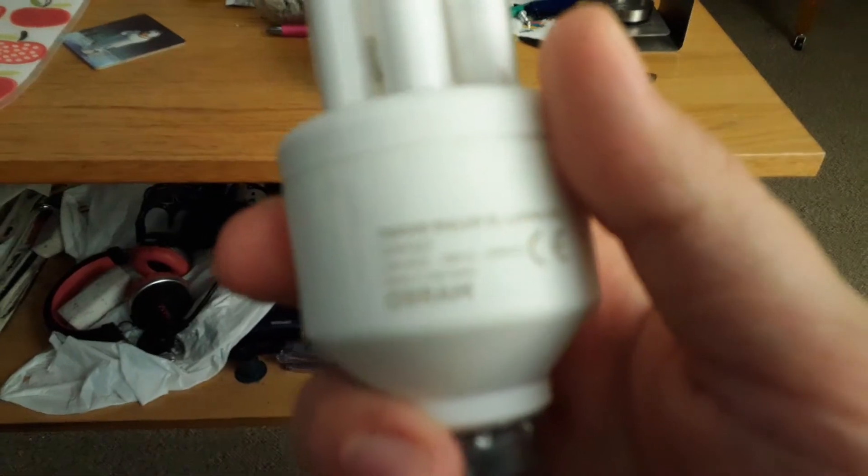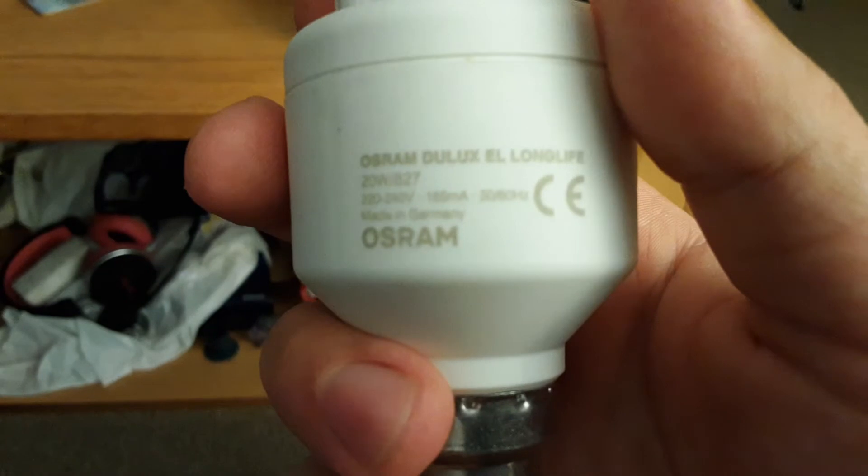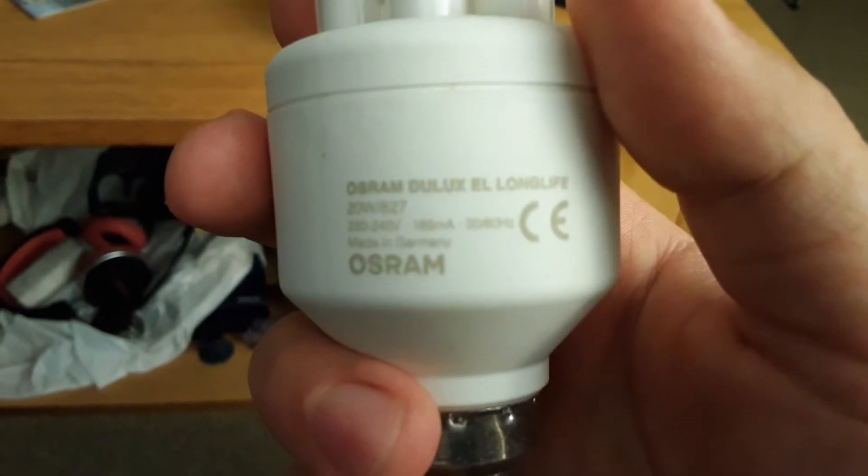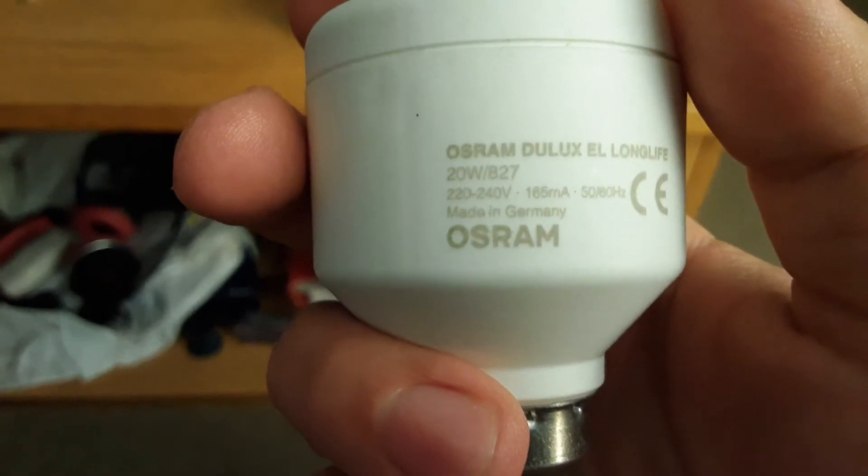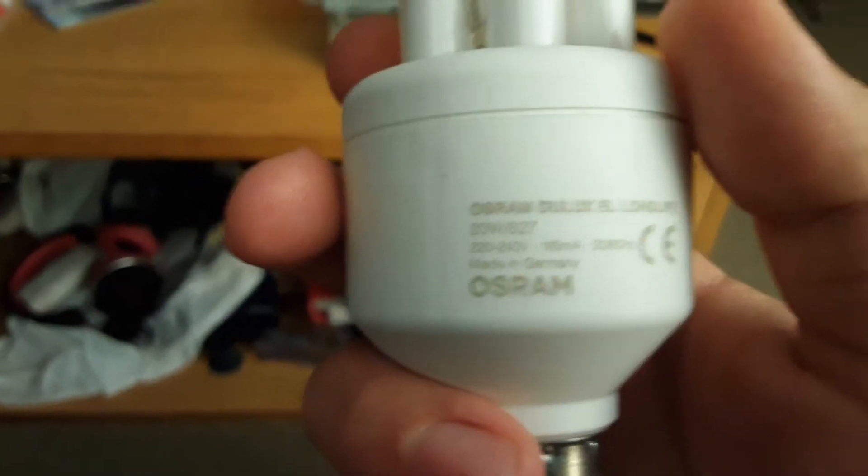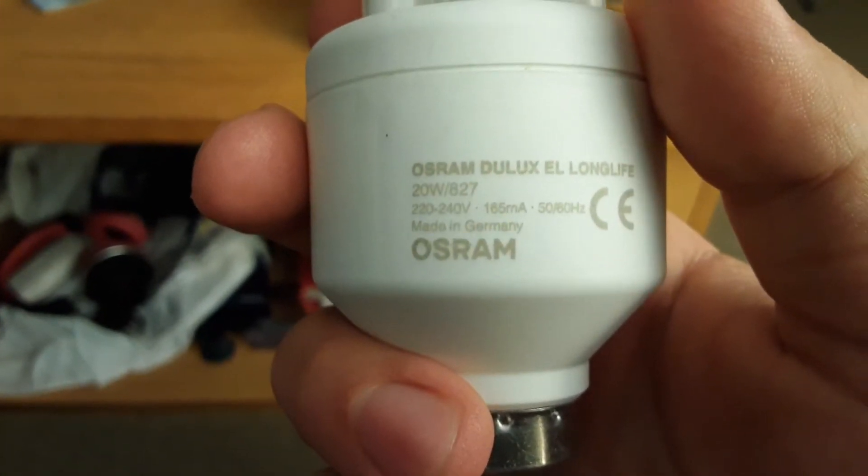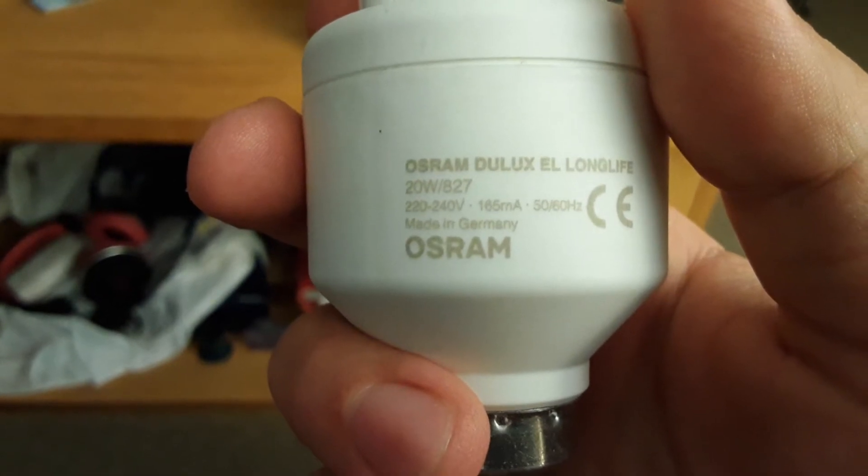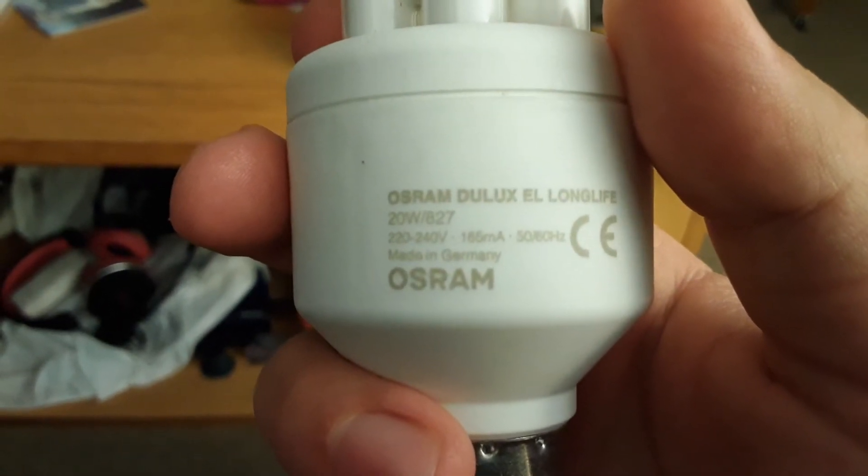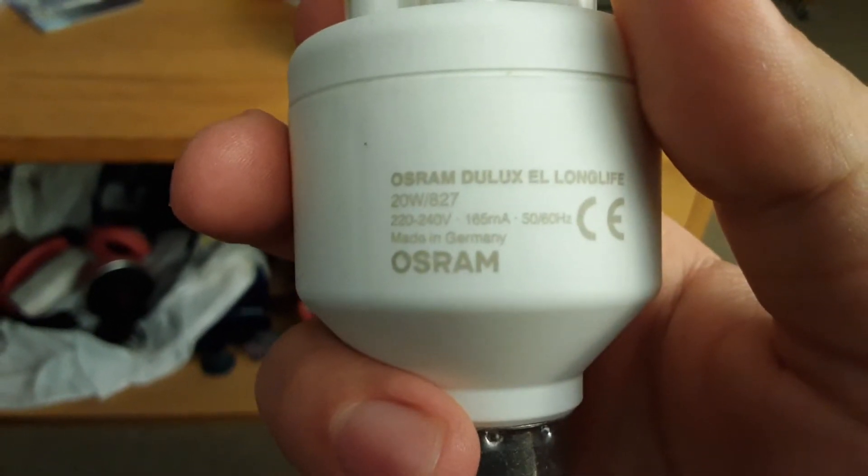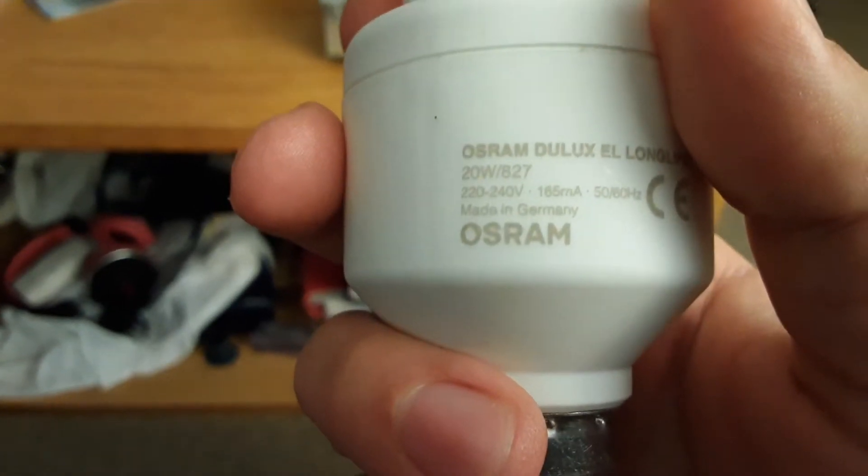This has got 20 watts, and that equals 100 watts. It says Osram Deluxe L Long Life 20 watt slash 827. That's 827 Kelvin, and it's got 220 to 240 volts, 165 RNA, 50 slash 60 hertz, made in Germany, Osram.